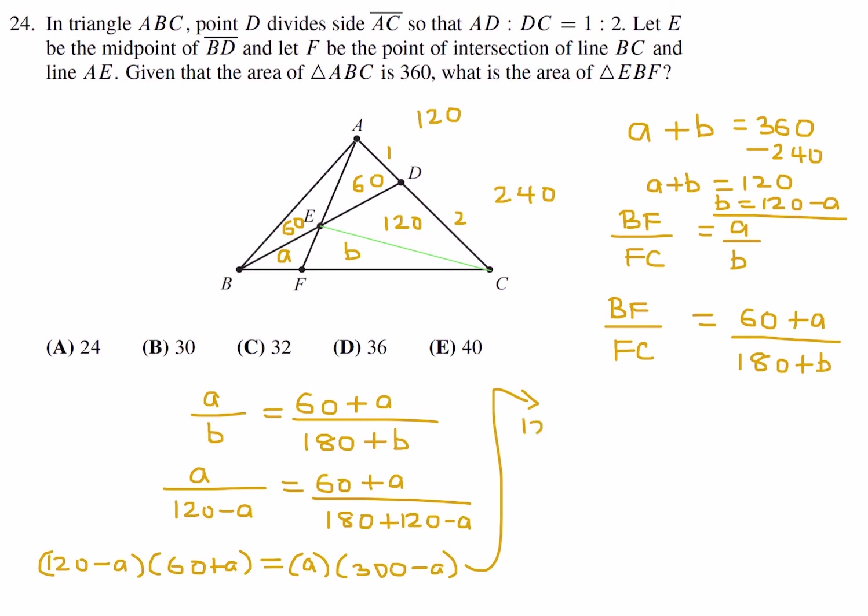So when we do this cross multiplication, you get 120 times 60 plus 120A minus 60A minus A squared, and that is equal to 300A minus A squared. The A squared is canceled from both sides. And you are left with just 120 times 60, and when you collect all the A's, you get 240A. So A would be 120 times 60 over 240, and that means A is equal to 60 over 2, which is 30. So number 24, the answer is B.